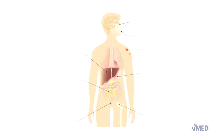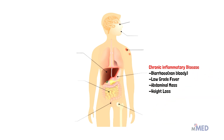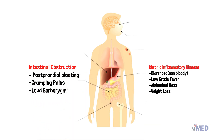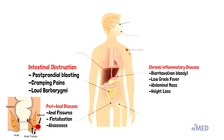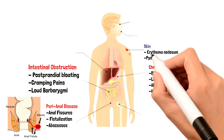Crohn's disease presents with diarrhea (sometimes bloody), low-grade fever, abdominal mass, weight loss due to malnutrition, and postprandial bloating, cramping pains, and borborygmi — intestinal rumbling sounds caused by moving gas. Perianal disease is very common because the anus is affected; anal fissures, fistulization, and abscesses can occur. Fistulas are abnormal connections between two epithelialized surfaces and can form between the bowel and other organs.